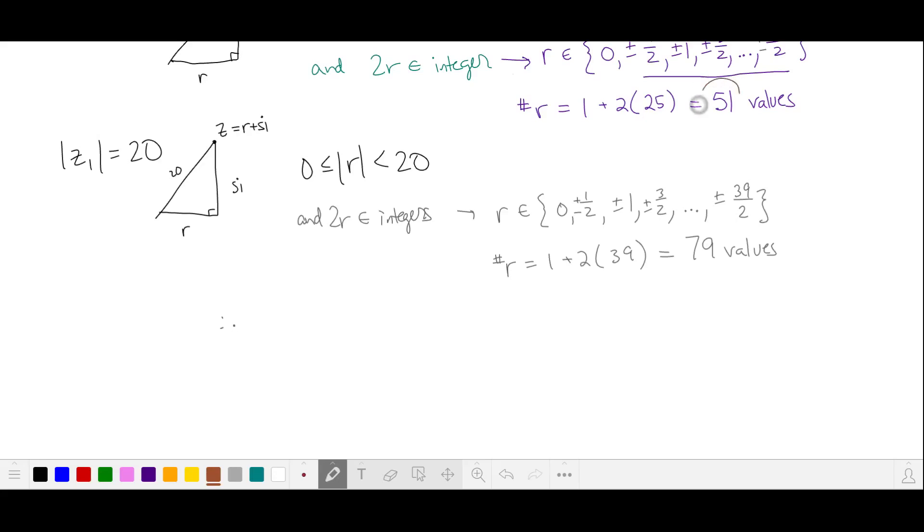In total, we have 51 plus 79, or 130, possible values for r. Each of these determines a unique value for s, and so a unique z1 and z2 are two complex roots and non-real.